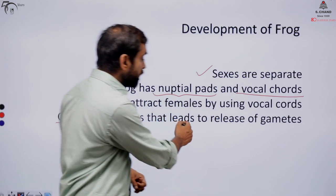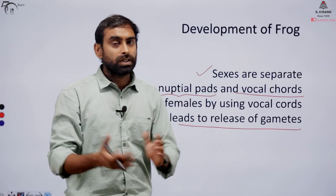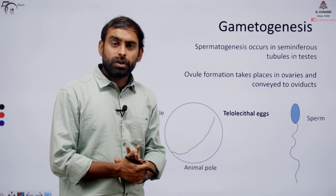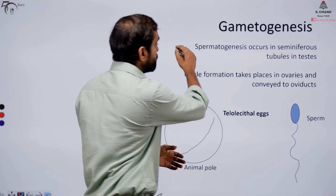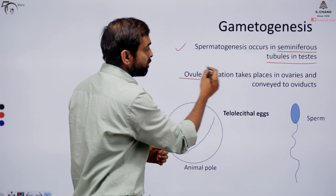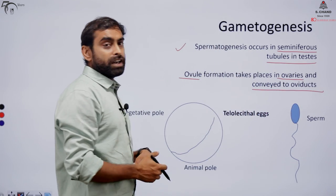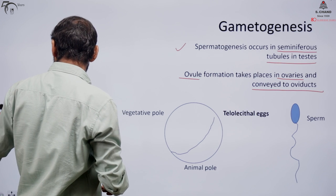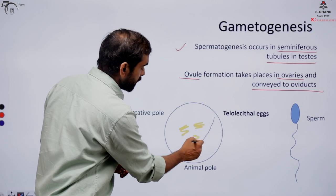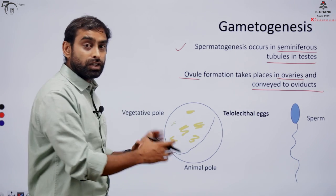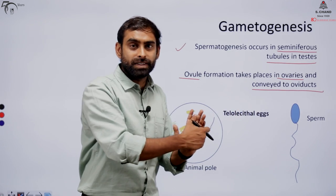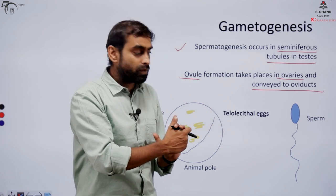This copulation leads to the release of gametes, and then they undergo fertilization. Gametogenesis is the same as in other organisms — spermatogenesis occurs in the seminiferous tubules of the testes, and ovule formation occurs in the ovaries. We should also know that frog eggs are mesolecithal eggs, with an intermediate quantity of yolk — not like mammalian eggs, and not like bird eggs.